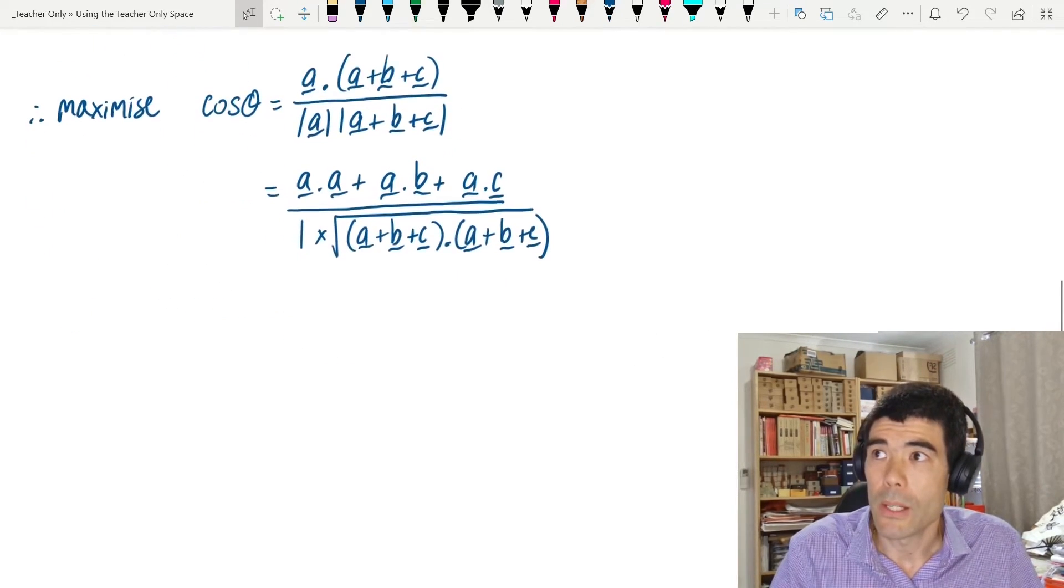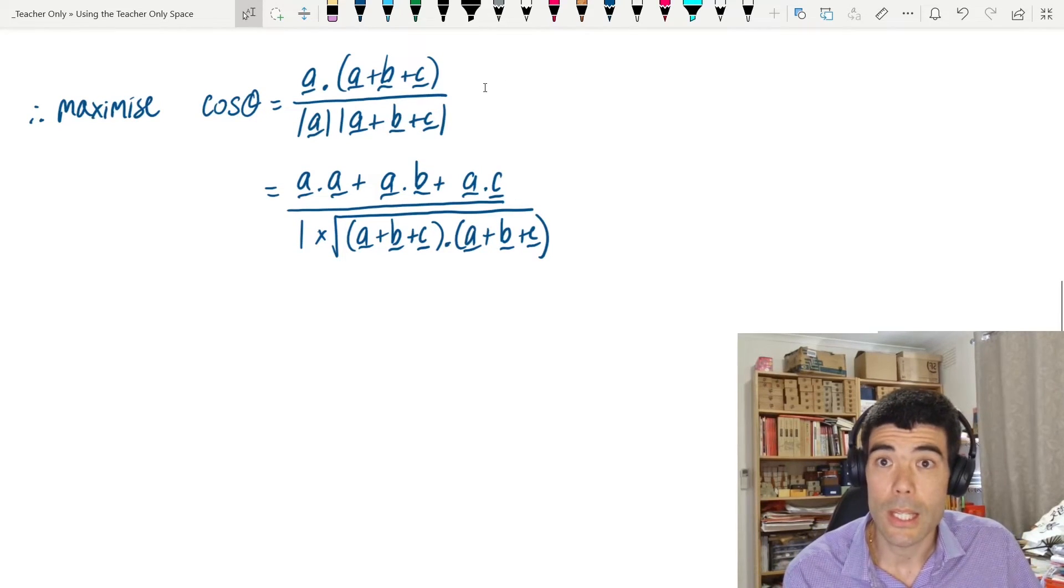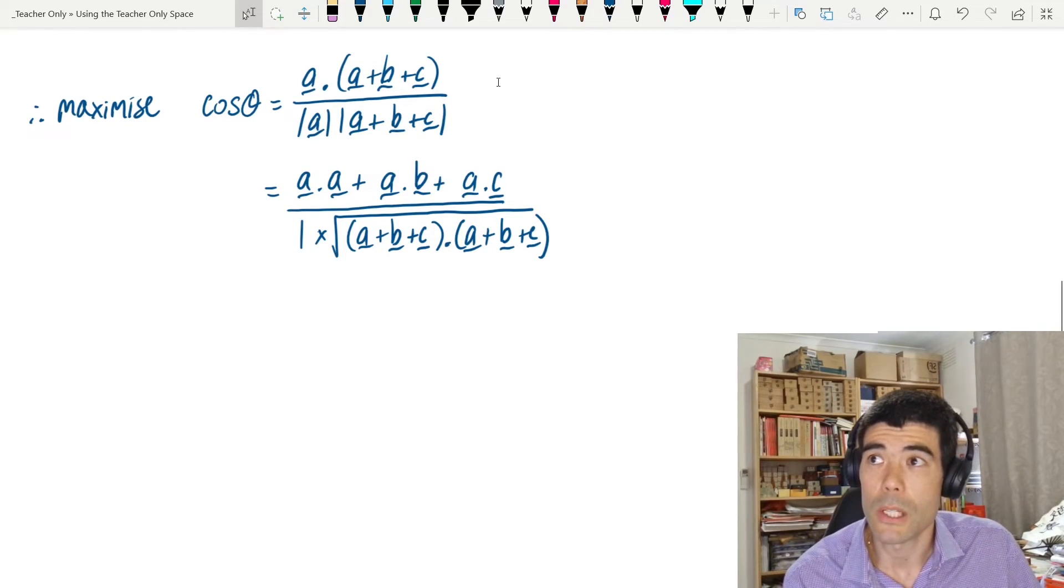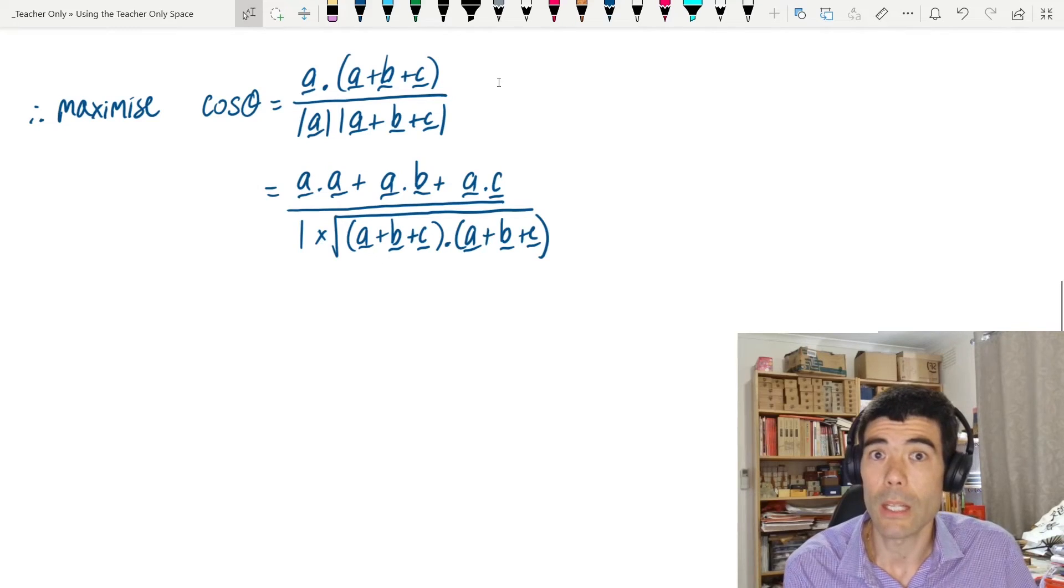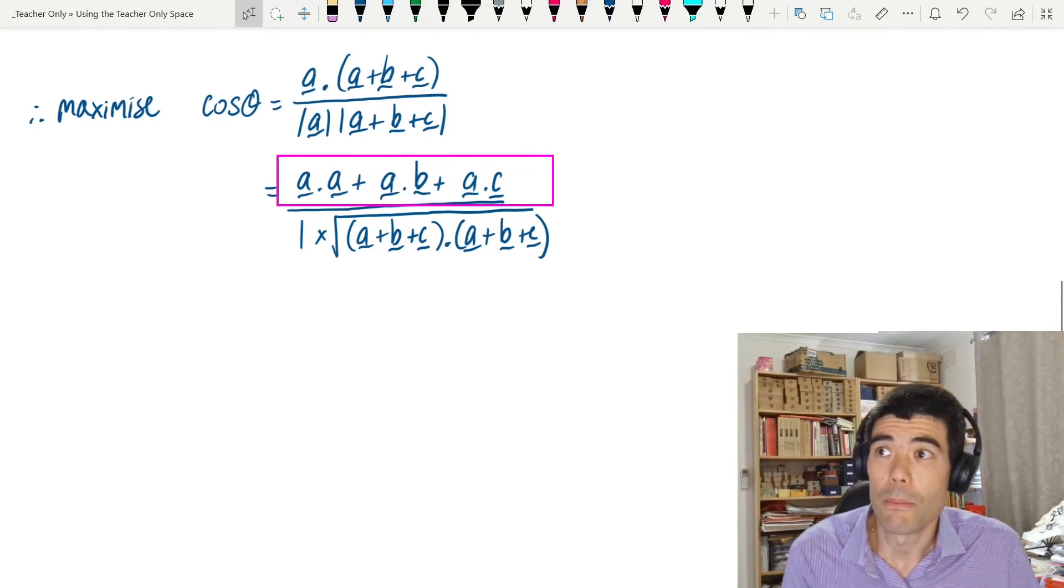So we want to maximize cosine theta. Again, using our scalar product formula, we have this expression here. Expanding the brackets on the top, we get a dot a plus a dot b plus a dot c.